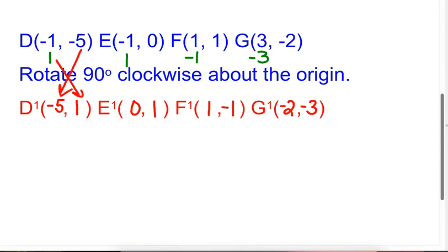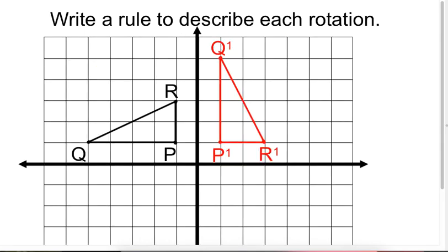The other part of our learning target does things like this. Write a rule to describe each rotation. So the original figure is PQR in black there on the left. And the new image is P prime, Q prime, R prime, in red on the right. And we have to decide, how did it get from where it started to where it is now? Did it go 90 degrees? Or did it turn 180 degrees? Well, it's very easy to tell. And here is how I suggest you do it.